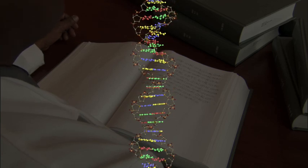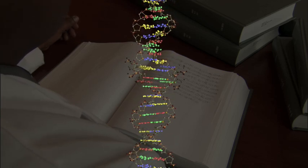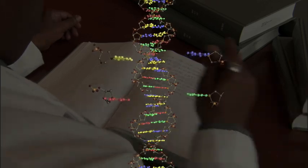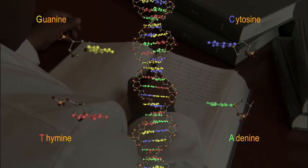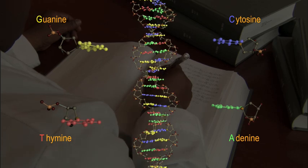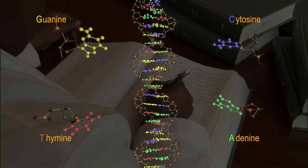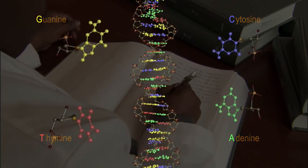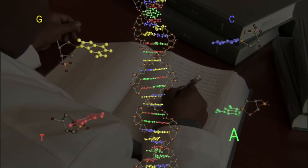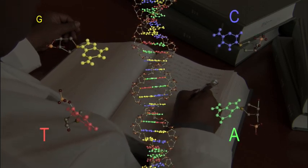These steps of the DNA ladder are composed of just four different molecules: adenine, thymine, cytosine, and guanine. And it is common to refer to them by their initials: A, T, C, G.